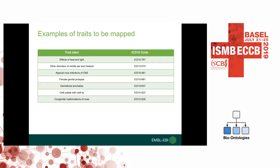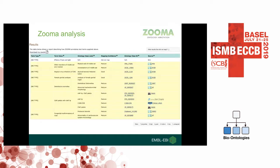Here's an example of some of the traits from the UK Biobank data that were previously mapped to ICD-10 codes. Zooma automatically provides optimal ontology mapping suggestions for terms using a combination of ontologies and previously curated data sources. Here are the previous examples that have been automatically annotated by Zooma, which we would then manually curate.